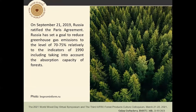On September 21st, 2019, Russia ratified the Forest Agreement. Russia has set a goal to reduce greenhouse gas emissions to the level of 70–75% relative to the indicators of 1990, including taking into account the absorption capacity of forests.